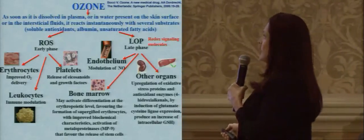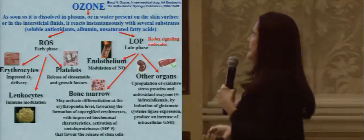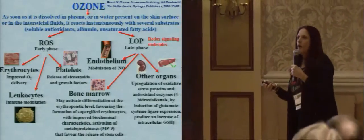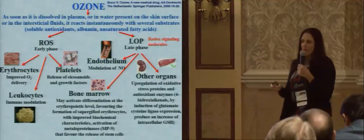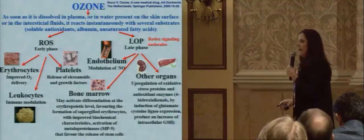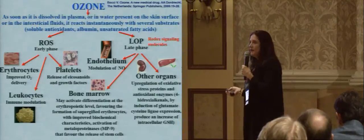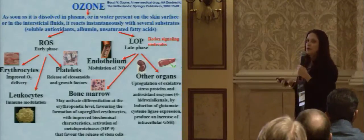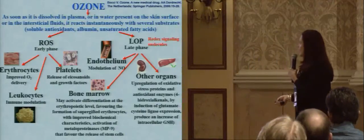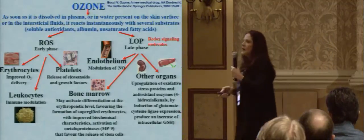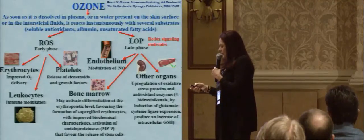Reactive oxygen species can also go to platelets and release eicosanoids and growth factors. This is the early phase. In the late phase, lipid oxidation products are produced — these are redox signaling molecules that in trace amounts can reach all organs and stimulate different biochemical pathways. They can go to endothelium and modulate nitric oxide, or go to bone marrow and activate differentiation at the erythropoietic level, favoring deformation of erythrocytes with improved biochemical properties, or activate metalloproteinases that favor the release of stem cells, or go to other organs and upregulate the oxidative stress response. It can go to every organ, with different possibilities.